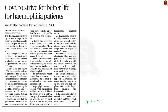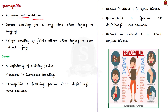The next news article talks about hemophilia. The Home Minister said that the Health Department will try its best to improve the quality of life of hemophilia patients as per international protocol, ensuring maximum treatment facilities at Taluk Hospital level. In this context, let us learn about hemophilia. What is hemophilia? Hemophilia is an inherited condition. It causes bleeding for a long time after injury or surgery and painful swelling of joints either after injury or even without injury. Inherited means the disease is passed from parents to children through their genes.